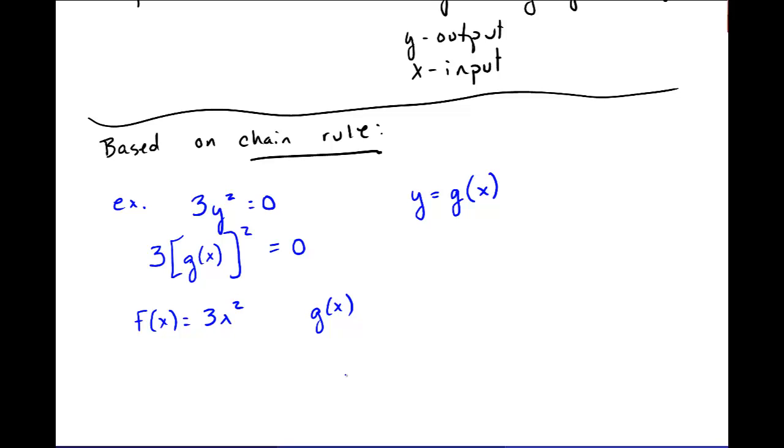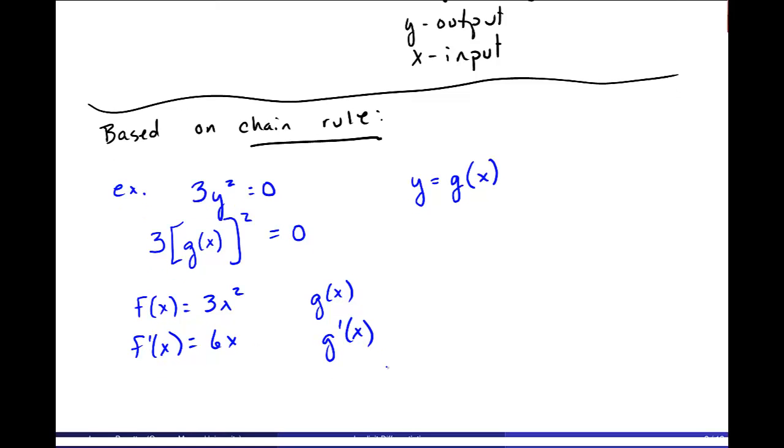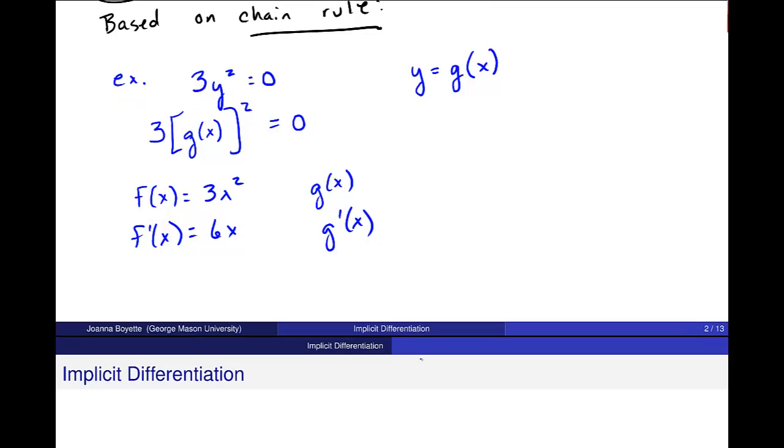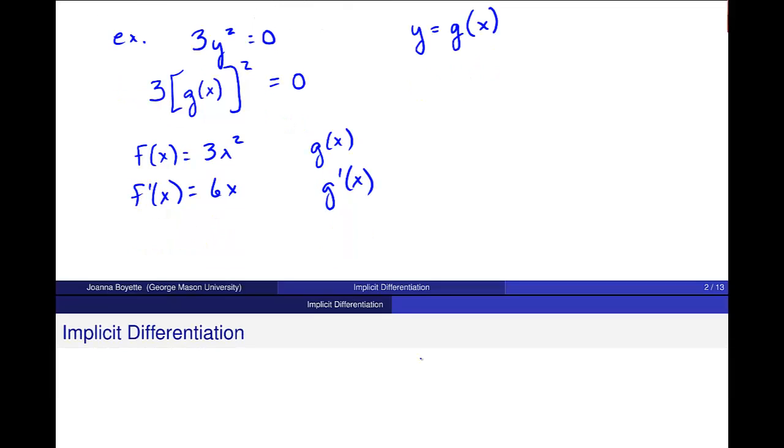And my inside function is just this g of x. I don't know what it is. So, f prime of x is equal to 6x. And g prime is just g prime. So, when I actually take the derivative of this left side, I put, remember, if my original function is h of x equals f of g of x, then h prime of x is f prime of the original inside times g prime. So, I'm going to use that here.